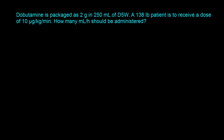Our target is to determine the flow rate in milliliters per hour. We've been given a weight-based dose of 10 micrograms per kg per minute. We have the volume being infused, which is 250 milliliters, and we know the amount of dobutamine in that bag — 2 grams. We also have the patient's weight. Do we need all the information in the question? Yes, in this particular example we would need to use all the numbers provided. But let's see how that works.